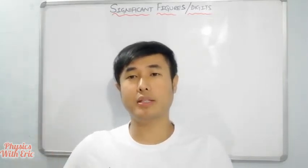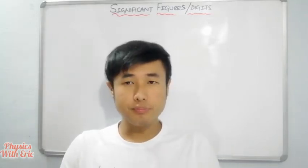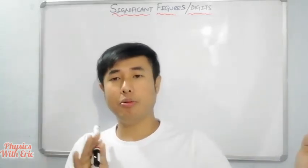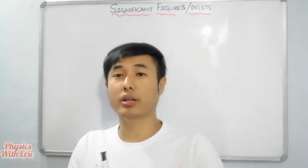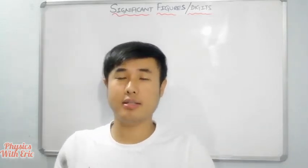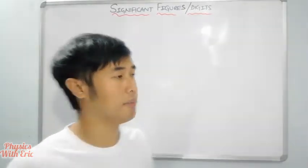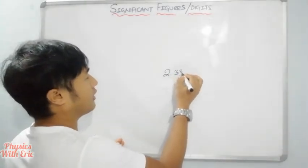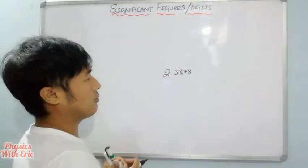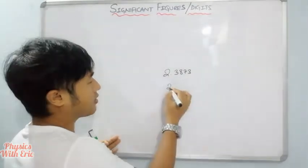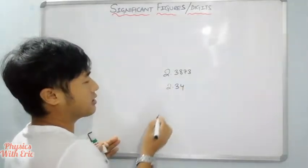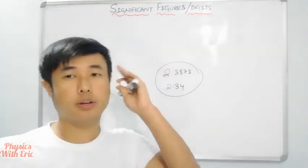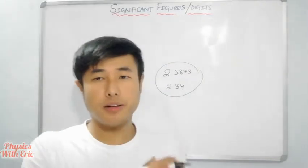Significant figures — why are they important? This is the main reason. We have to deal with large numbers, and we need rounding off. After understanding significant figures, we are going to look at rounding off. For example, 2.3873 is rounded off.